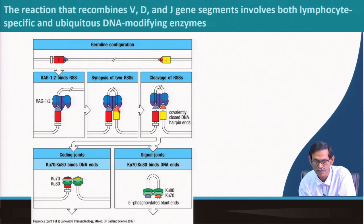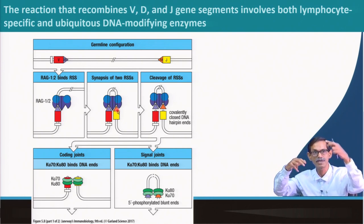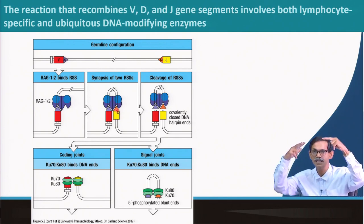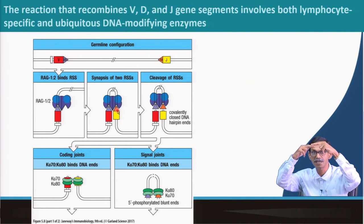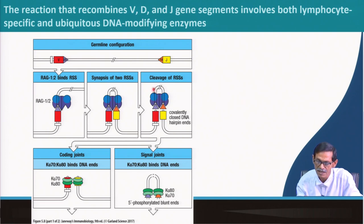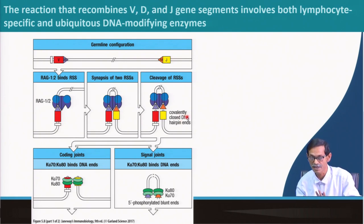When the V and J segments come together, there is endonuclease activity that cuts the two strands — one cut at the V segment and another at the J segment. Then they are opened up. This cut creates a loop, and the loop is cut generating covalently closed DNA hairpin ends, which I will discuss in detail later.